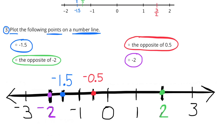The opposite of 5 tenths: the opposite of 5 tenths would be negative 5 tenths. So halfway between 0 and negative 1 on the number line, I've plotted negative 5 tenths. And then finally, negative 2: 2 units to the left of 0 on the number line, I've plotted negative 2.